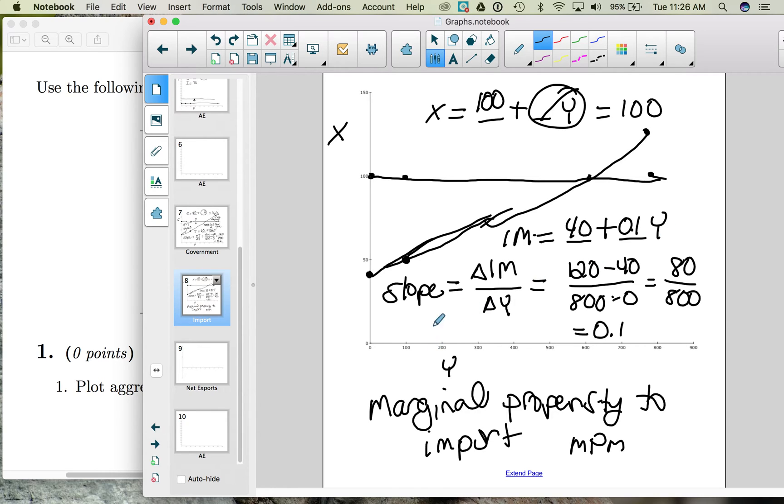Notice that at low levels of income, like income of $200, the amount we are exporting is more than the amount we are importing. X is more than imports. And if we are exporting more than we are importing, then the amount of money coming in from selling goods to foreigners is more than the amount of money leaving. And so we have a trade surplus.